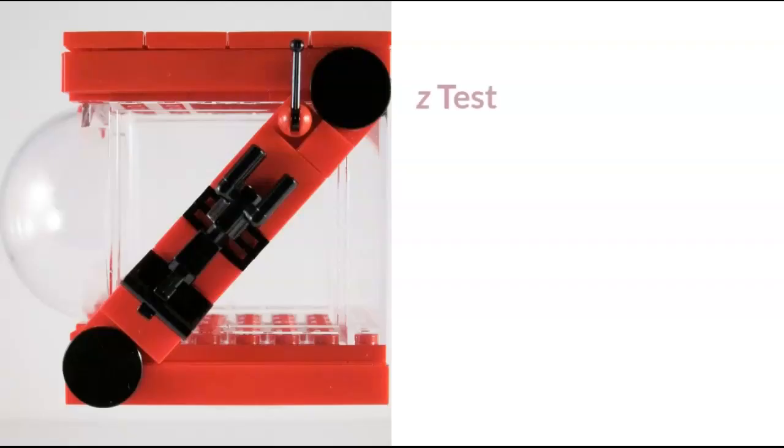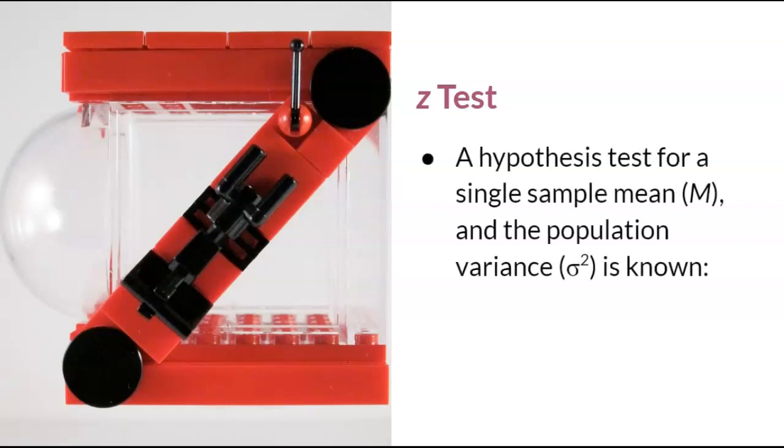We can figure out what a z-test is by simply breaking it down into its parts. First, the word test is referring to a hypothesis test, so we'll be using the four steps that you have already learned about hypothesis testing. Second, the z is referring to using a z-score. Basically, we will be conducting a hypothesis test using z-scores.